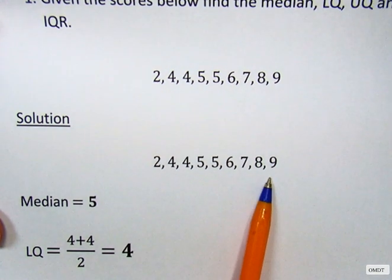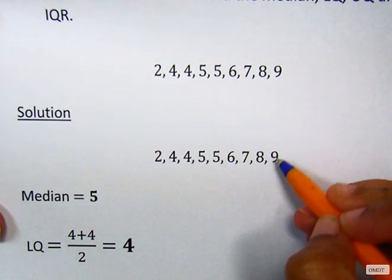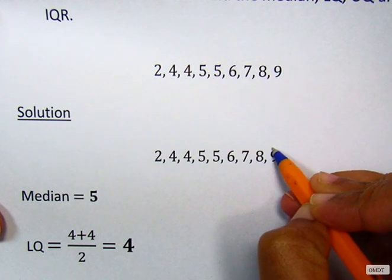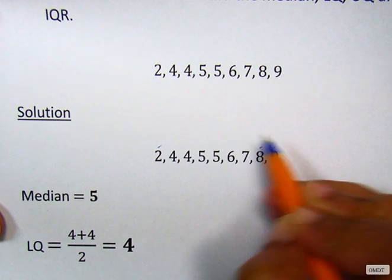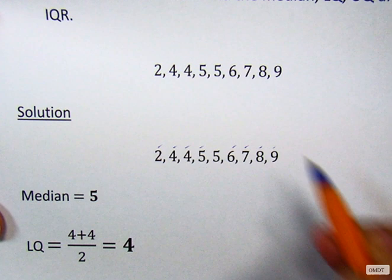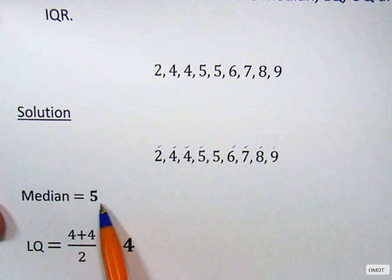Next, we have to find the median. We have to find the middle score. What we can do is tick from the top, one, and one from the bottom, and then we can do this until we come to the middle. So our middle score is five. Our median is five.